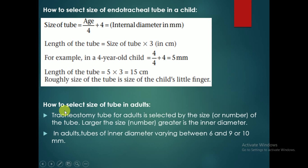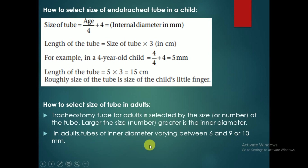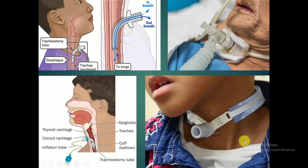How to select the tube in adults: the tracheostomy tube for adults is selected by size — the larger the size, the greater the inner diameter. In adults, tubes with an inner diameter varying between 6 and 9 or 10 mm are used.